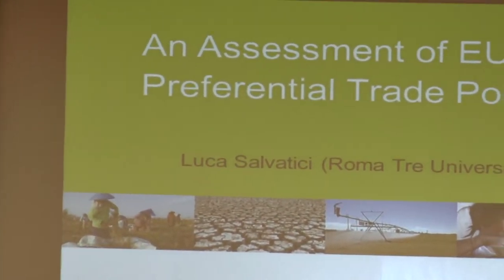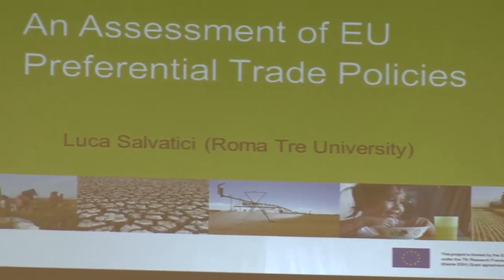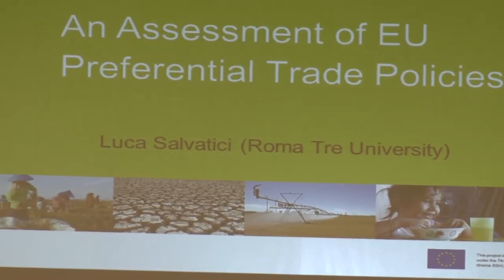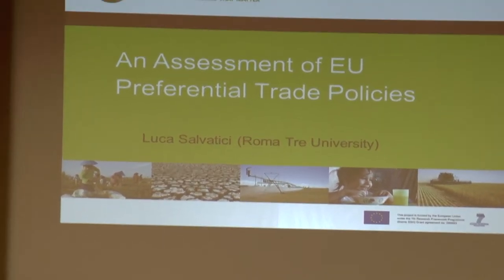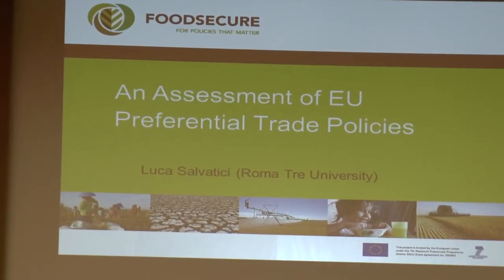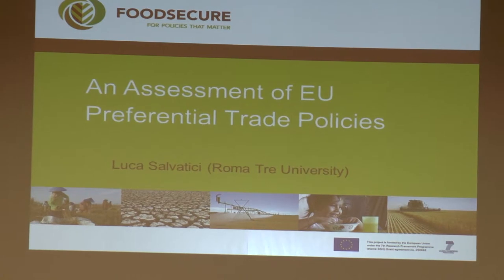We are at the end of Work Package 4, focusing on Deliverable 4.4, which concerns the world effect on EU policies on food security. This covers many different policies: food aid, EUA, and trade policies. Luca will first present his work on preferential trade policies, and then I will summarize two other works because the authors are not present today.